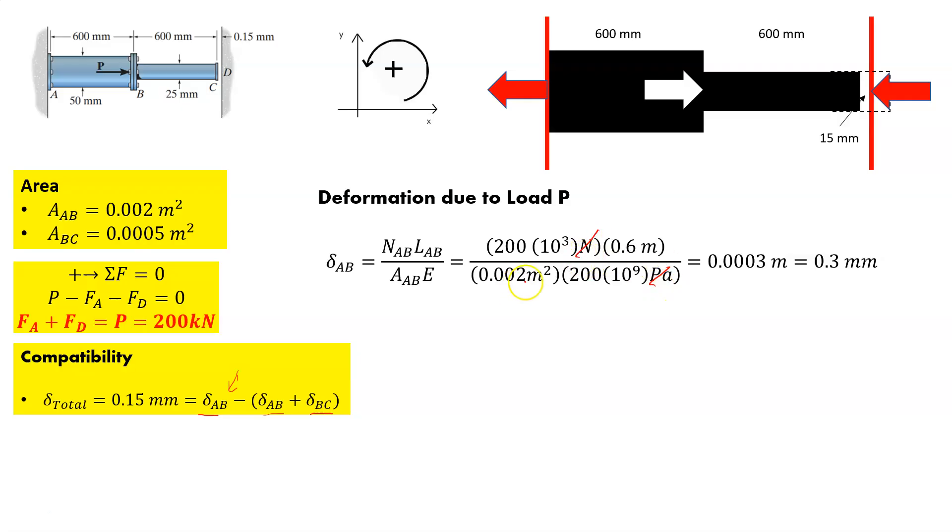If you notice a pascal is just the newton per meter squared. So this cancels. You can always check your units making sure that they come out correctly and you end up with nothing but meters for your displacement, which is 0.0003 meters or 0.3 millimeters.